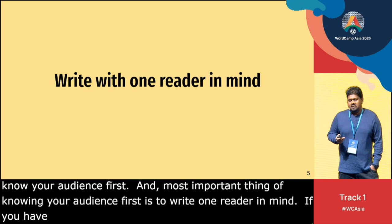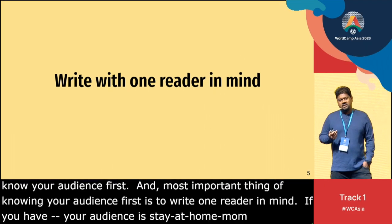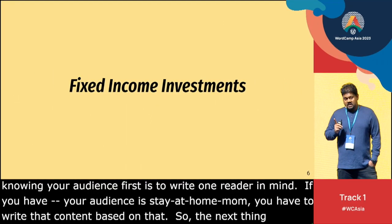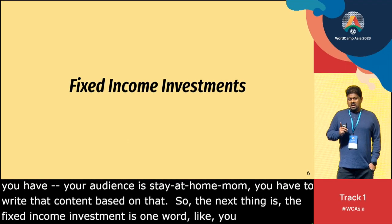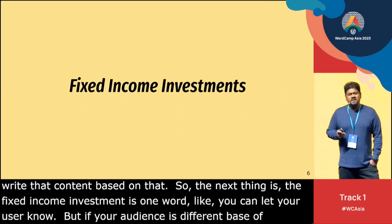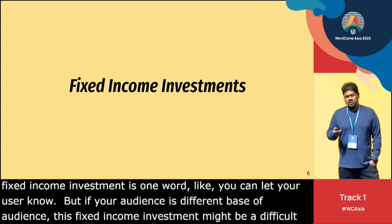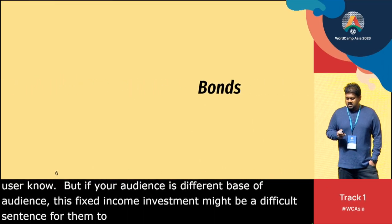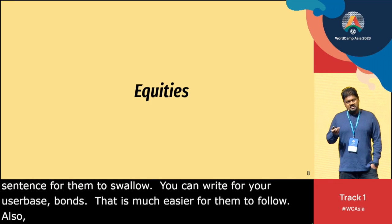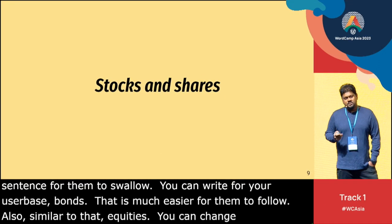If your audience is a class-five-year-old or a stay-at-home mom, then you have to make that mindset and write content based on that. For example, 'fixed income investment' might be a difficult phrase to swallow for a general audience. Instead, you can write 'bonds' — that will be much easier for them to follow. Similarly, 'equities' might be difficult; you can change it to 'stocks and shares.' And 'capital' can be changed to 'your original investment.'